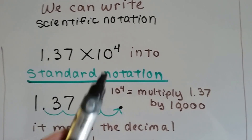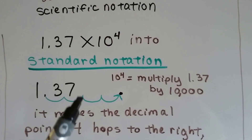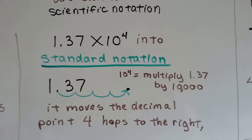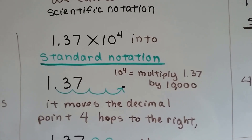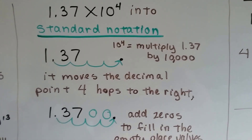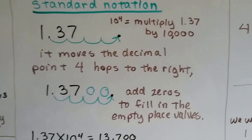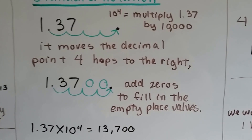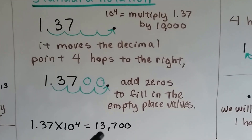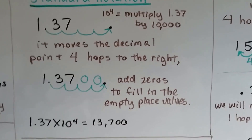All we have to do, because of this 4, is do 4 hops. 10 to the 4th power is the same thing as multiplying 1.37 by 10,000. It moves the decimal point 4 hops to the right, and then we just add zeros in the empty places to fill in the place values. So 1.37 times 10 to the 4th power is 13,700 — put a comma there because of those three spaces.